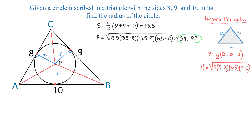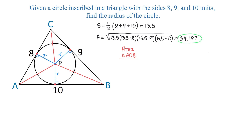Here I have them connected, and each of these line segments also represents the radius of the circle. Now let's take a look at triangles AOB, BOC, and AOC. These triangles together form triangle ABC. In triangle AOB, the base is 10 and the height is R. The area of this triangle is one half times base 10 times height R, which simplifies to 5R. In triangle BOC, the base is 9 and the height is R. The area of this triangle is one half times 9 times R, which equals 4.5R.